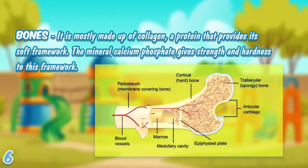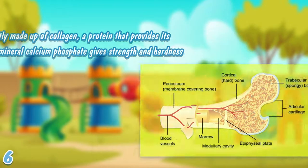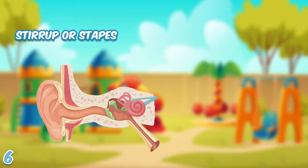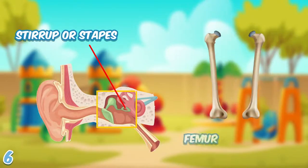Bones: a bone is a living organ mostly made up of collagen, a protein that provides its soft framework. The mineral calcium phosphate gives strength and hardness to this framework. Bones come in different shapes and sizes. The smallest bone is the stirrup, or stapes, in the middle ear, and the largest bone is the thigh bone, or femur.